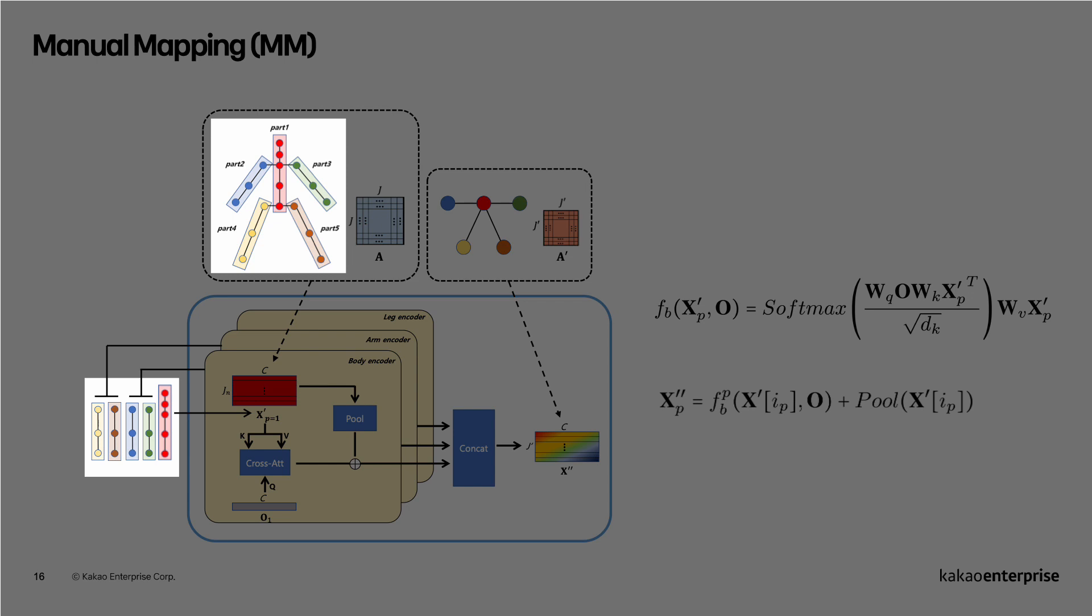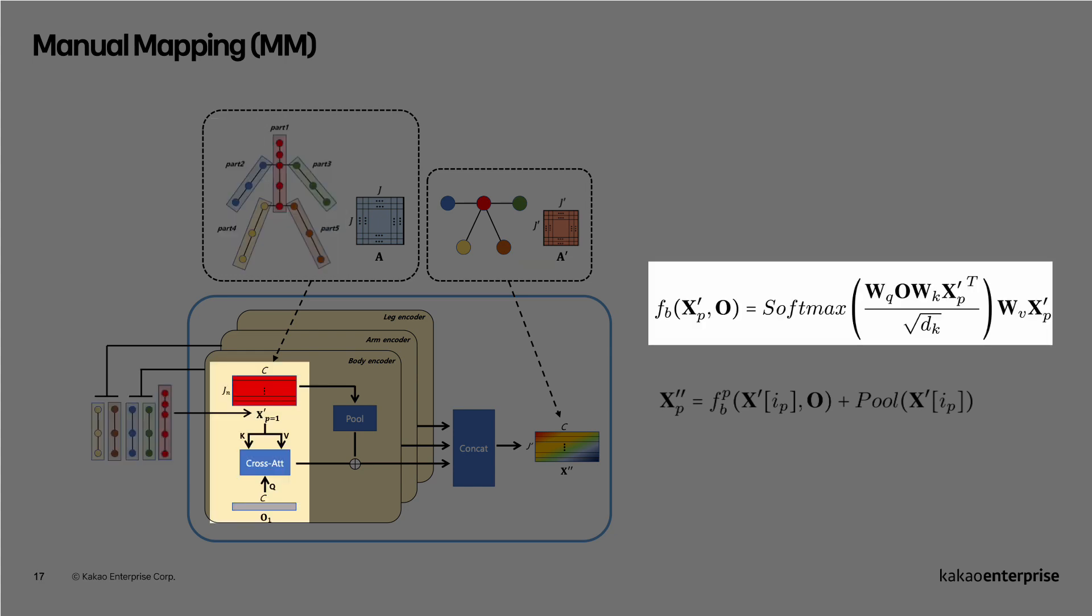First, MM module divides joints into five parts such as two arms, two legs, and main body. On each encoder, a simple cross-attention module is applied to transfer information from original joint space to the decreased one.